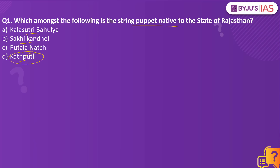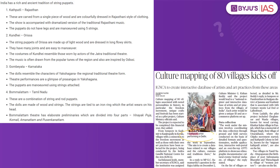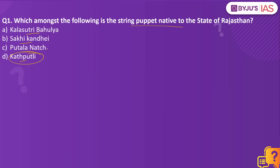We took this practice question because this article makes a mention of Kathputli. The different types of string puppets in India are: Kathputli, native to Rajasthan; Kundai, native to Odisha; Gumbayata, native to Karnataka; and Bumalatam, native to Tamil Nadu. As an assignment, put in the comment section which state practices Putla Naach and Kalasutri Bahulya.